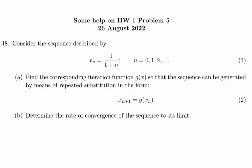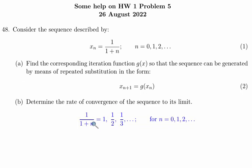First, it's a good idea to explore the sequence a bit. The sequence looks something like this: 1 over 1 plus n is 1, 1 half, 1 third, etc. As we increment n through the sequence of integers starting at 0, 1, 2, 3, and so on.